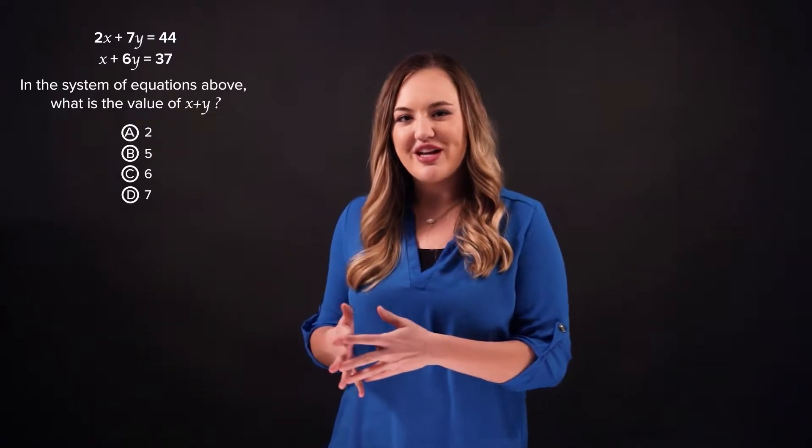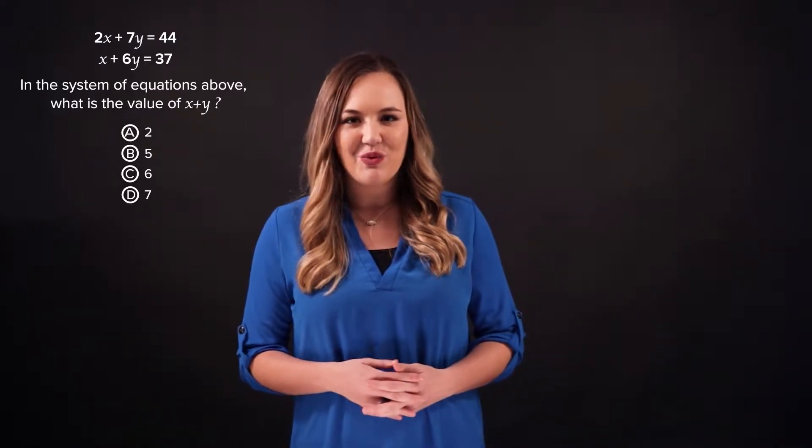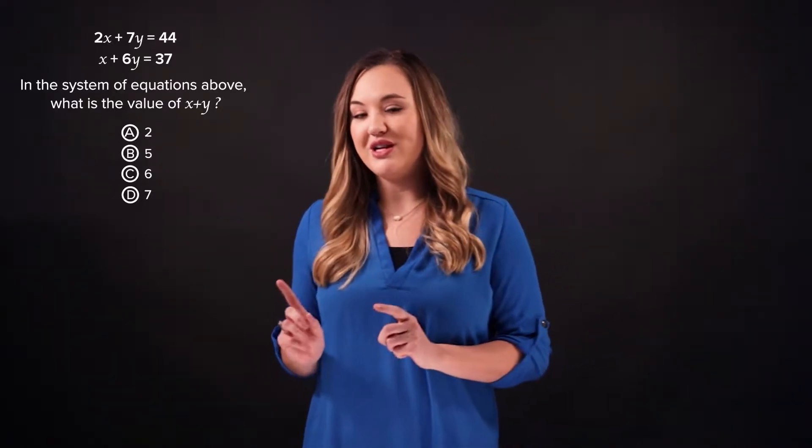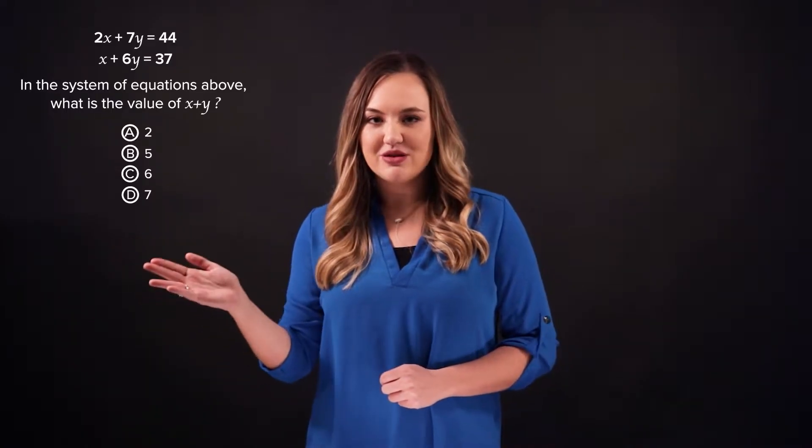The question gives a system of equations, 2x plus 7y equals 44, and x plus 6y equals 37. Now, also notice that it asks you for the value of x plus y.